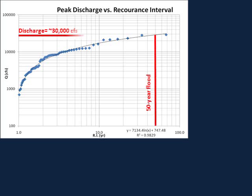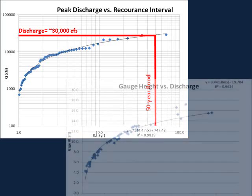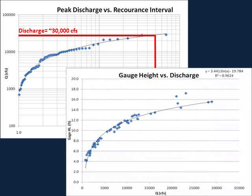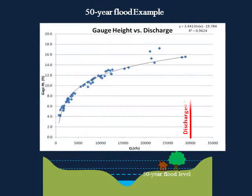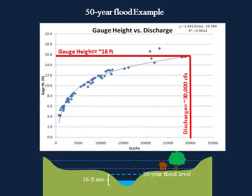Finally, once the recurrence interval has been calculated, the corresponding stream discharge and gauge height can be interpolated. The gauge height can then be used to determine what areas around the stream might be covered by water during certain sized storms.